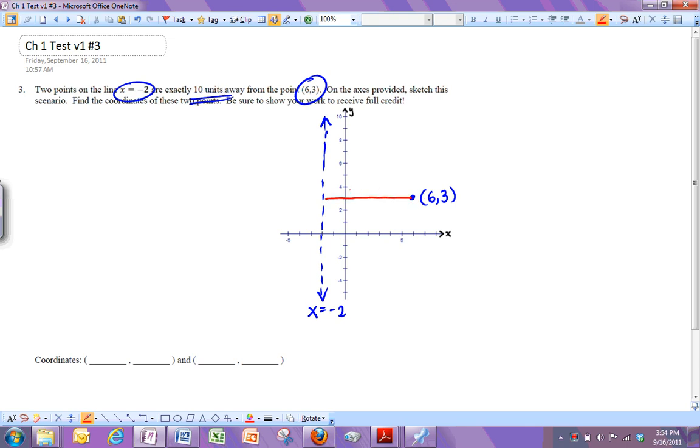And when you go left and right, only the x values change. So, 6 right here to negative 2 over here. So, if you do big minus little, 6 minus negative 2, we get 6 plus 2, which is 8. So, this guy is 8 units long.